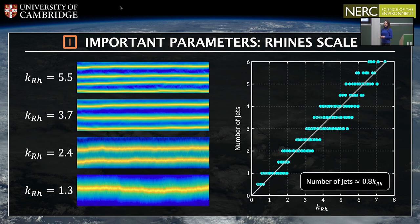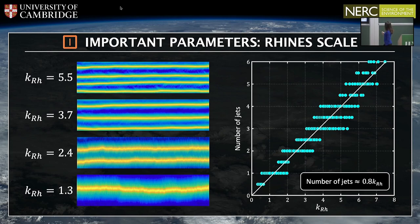Let's see how the Rhines scale affects the system in practice. I've taken four examples of different simulations where the Rhines wave number is systematically increasing. As you can see, as the Rhines wave number increases, so does the number of jets — the spacing between the jets is decreasing. On the right, I've plotted for a range of simulations the theoretical Rhines wave number against the actual number of jets observed, and you can see a fairly good relationship between the two.